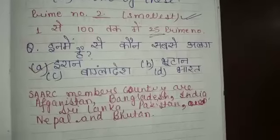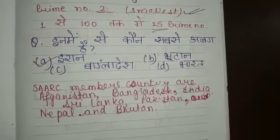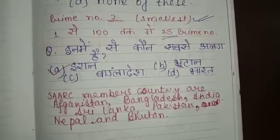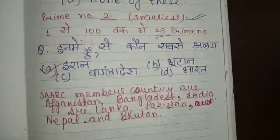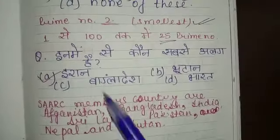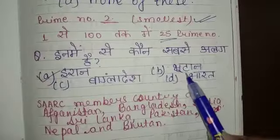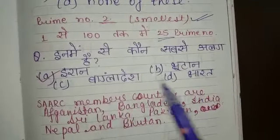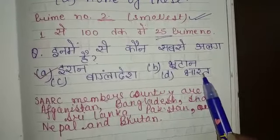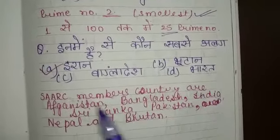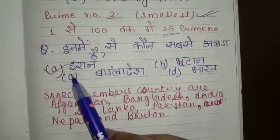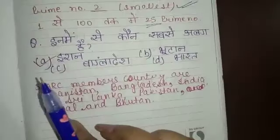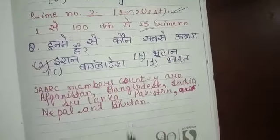The next question is: which one is the smallest? The options are Iran, Bhutan, Bangladesh, and Bharan. The correct answer is option number A, which is Iran.